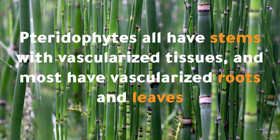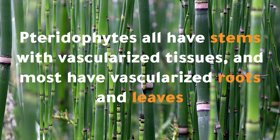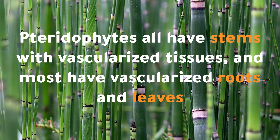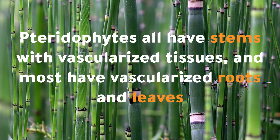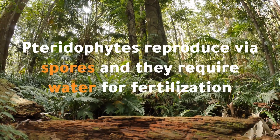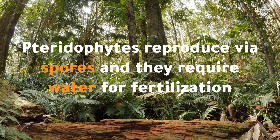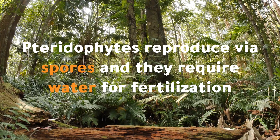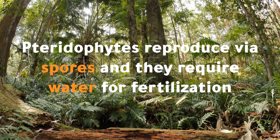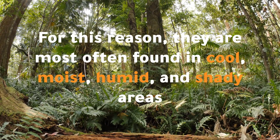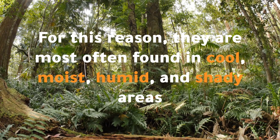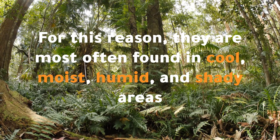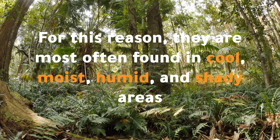Pteridophytes all have stems with vascularized tissues, and most have vascularized roots and leaves. Pteridophytes reproduce via spores and they require water for fertilization. For this reason, they are most often found in cool, moist, humid, and shady areas.